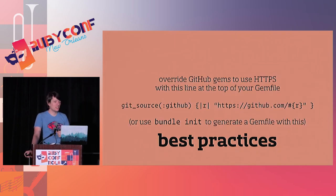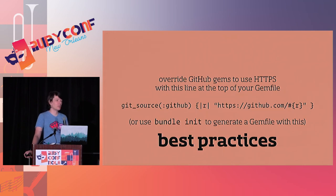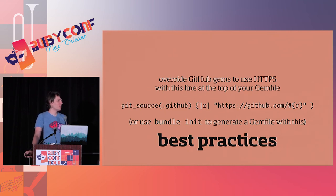Back to the HTTPS thing: we shipped Bundler with a GitHub option that used HTTP, which isn't secure, but we can't change it because some people don't have OpenSSL support in their Rubies. But you can change it — bundle init creates a Gemfile with that option, and you can overwrite the GitHub option to say 'only use HTTPS.'